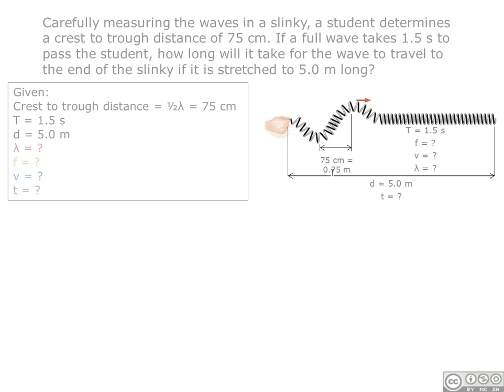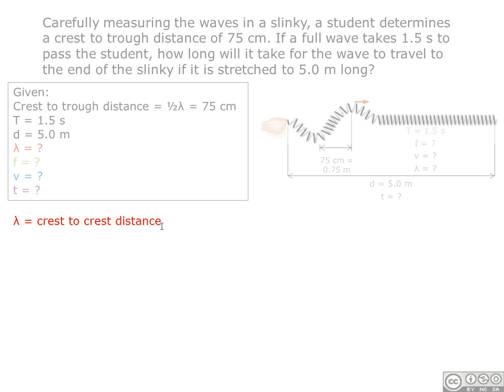Here is our diagram. First, we find the wavelength distance by finding the crest to crest distance, which is two times the crest to trough distance. We input our crest to trough value in meters, and we get the wavelength distance of 1.5 meters.